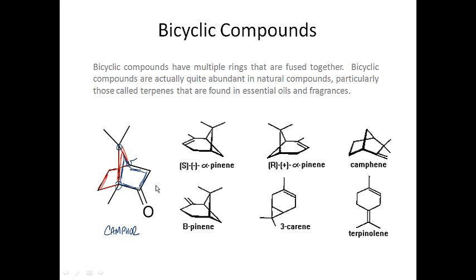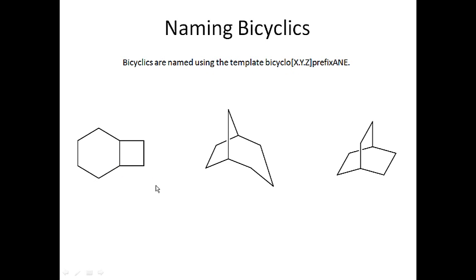When you see these fused systems, they are quite abundant in nature. The book goes into how you name these, and there's a certain template for naming bicyclics. Basically, you'll have 'bicyclo' in the name, three numbers in brackets separated by periods, then a prefix and '-ane.' The prefix refers to the total number of carbons in the fused ring system.